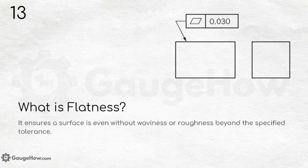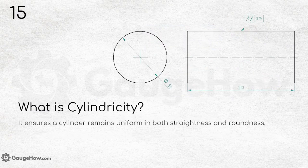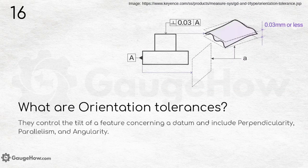Make sure to note down all the symbols, because in interviews you might be asked to write or draw them, write their definitions, or recognize a symbol and define it. What is circularity? It controls how close a cross-section of a cylindrical part is to a perfect circle. What is cylindricity? It ensures a cylinder remains uniform in both straightness and roundness.